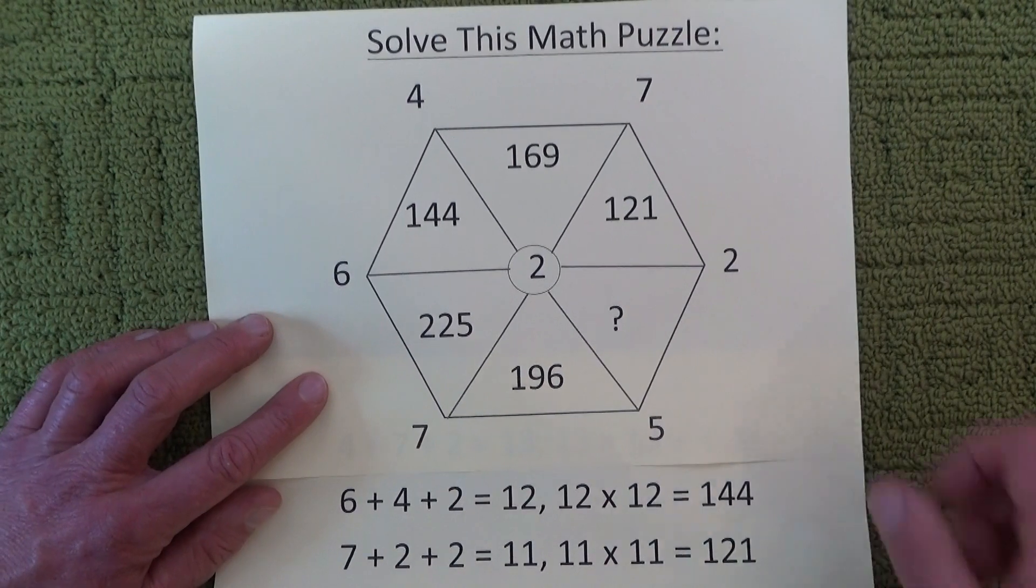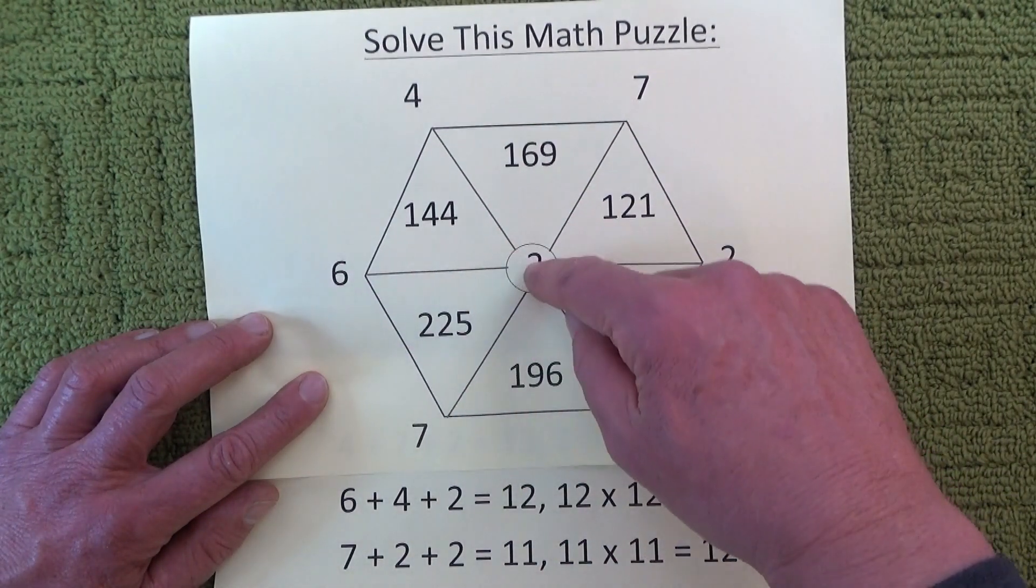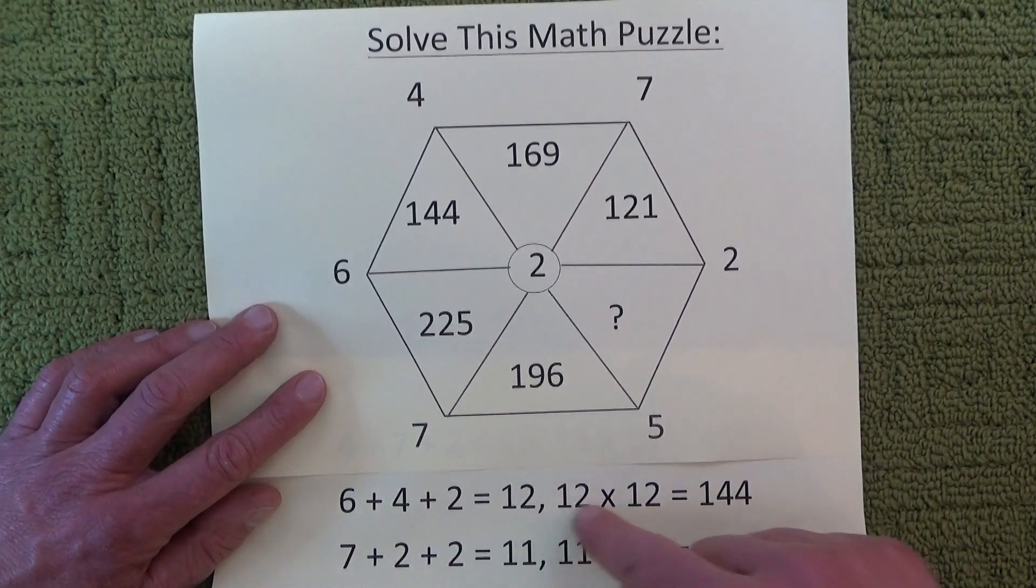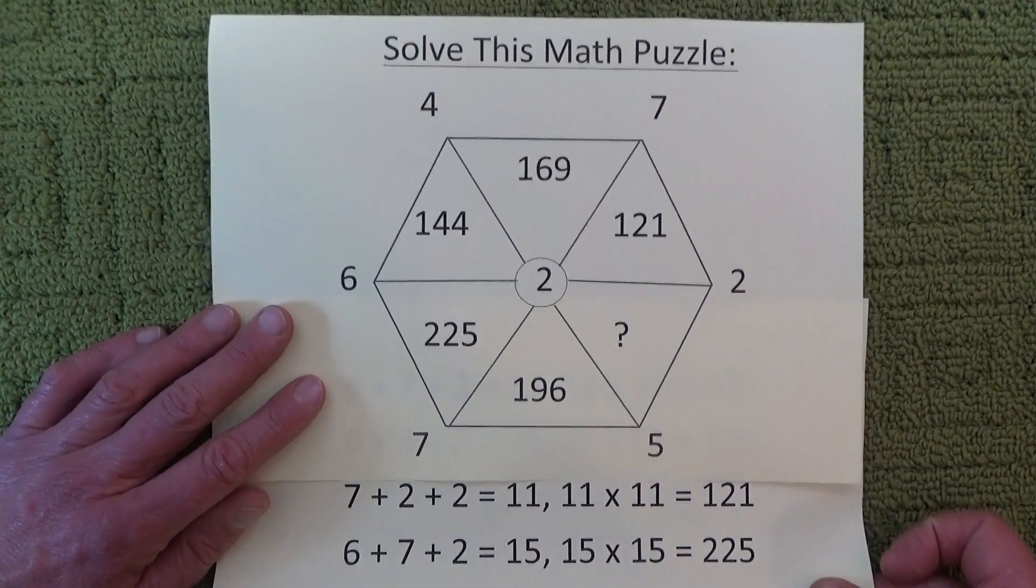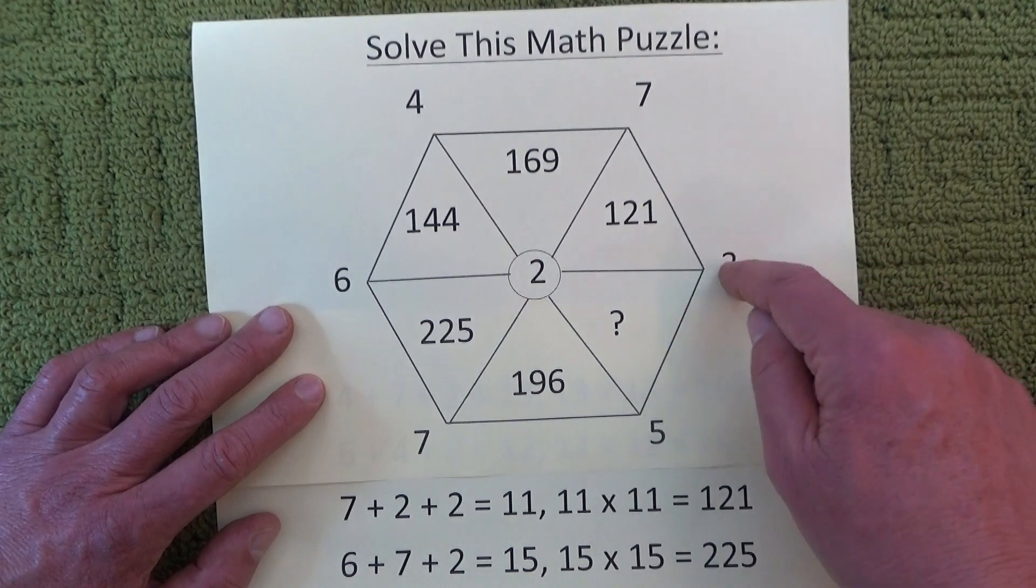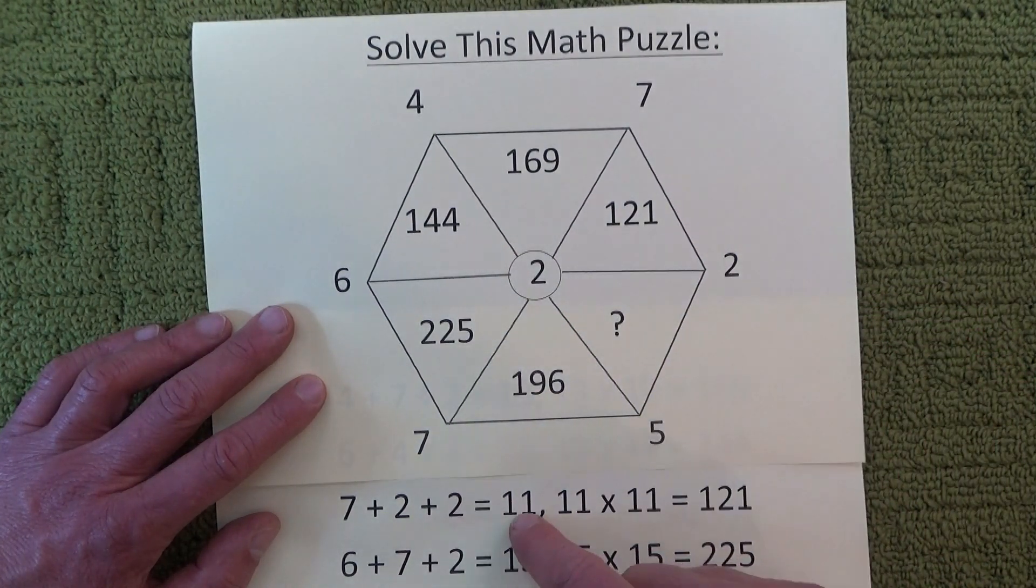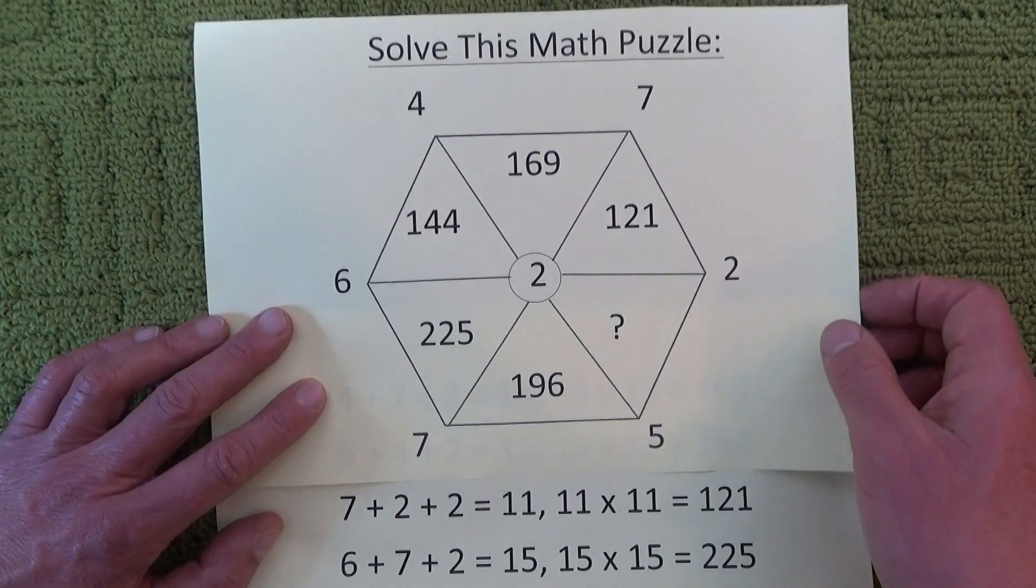And that's the same for this segment: 6 plus 4 plus 2 equals 12, 12 times 12 is 144. And over to the right hand side now, 7 plus 2 plus 2 equals 11, 11 times 11 is 121.